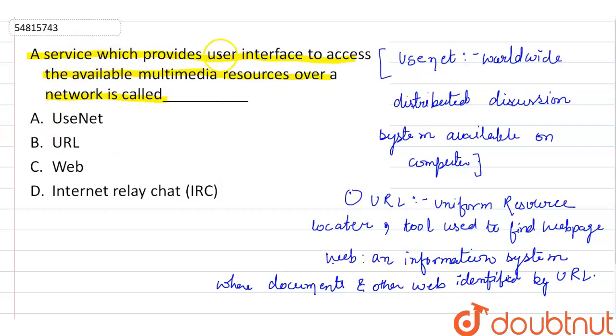A service which provides user interface to access the available multimedia resource over a network. So here our Web is correct because the web is also doing this. The web is allowing us to identify the resources by using the URL. So our answer is C. We will click on this and the Web is our answer.